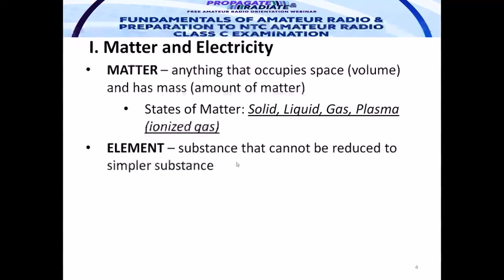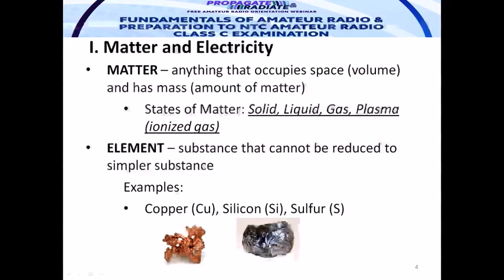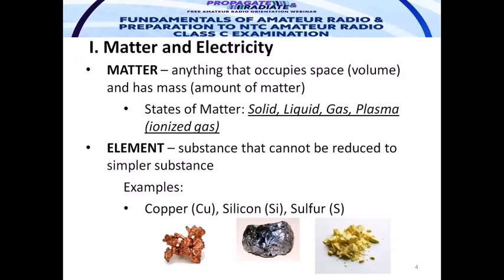Matter has its subdivisions. An element is a substance that cannot be reduced to a simpler substance. Examples include copper (symbol Cu), silicon (symbol Si), and sulfur (symbol S). The properties of materials affect the electrical characteristics of that material or substance.